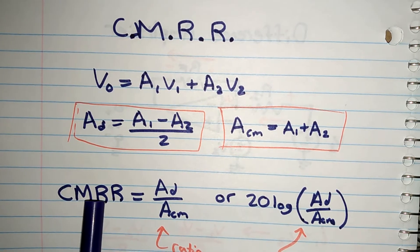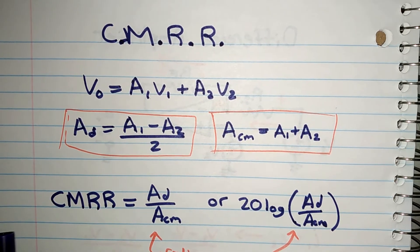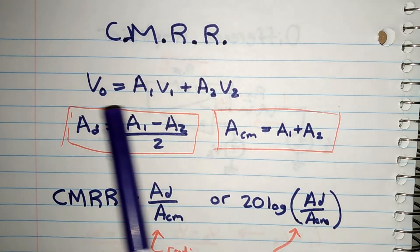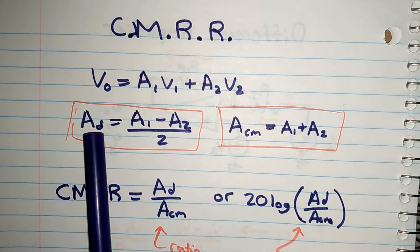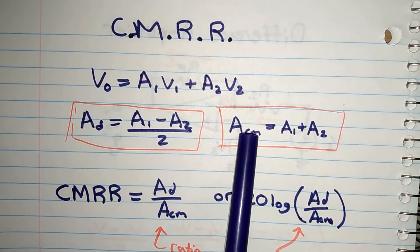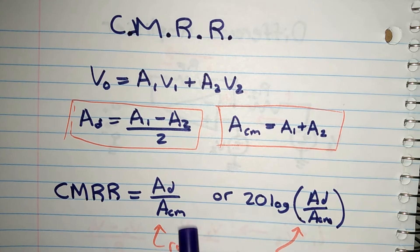So then the common mode reduction ratio would be AD over ACM, the differential gain over the common mode gain. This is the ratio between the two.